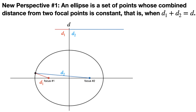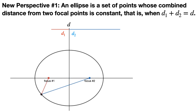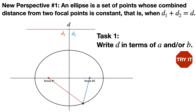Our new perspective is that an ellipse is a set of points whose combined distances from two focal points is constant — that is, d1 plus d2 equals d. Looking at the picture, d1 and d2 are the distances from a point on the ellipse to the two foci. As we go around the ellipse, sometimes d1 will be bigger and sometimes d2 will be bigger, but they always add up to the same value d. What is d in terms of a and/or b?